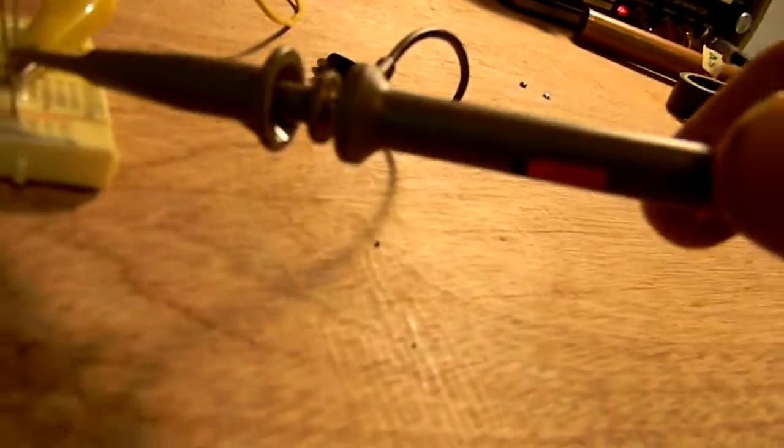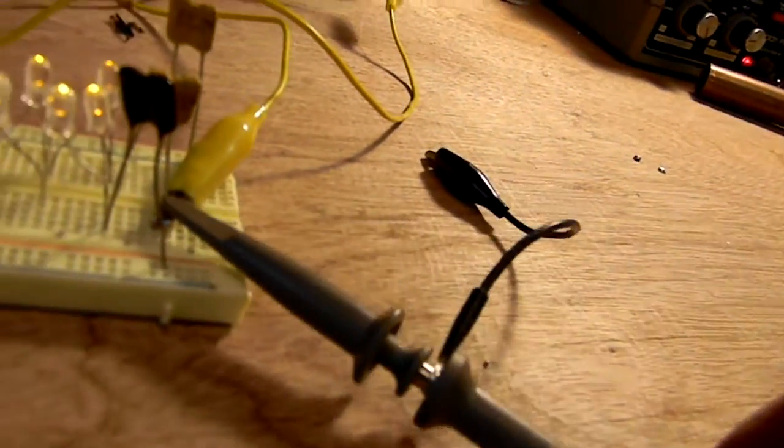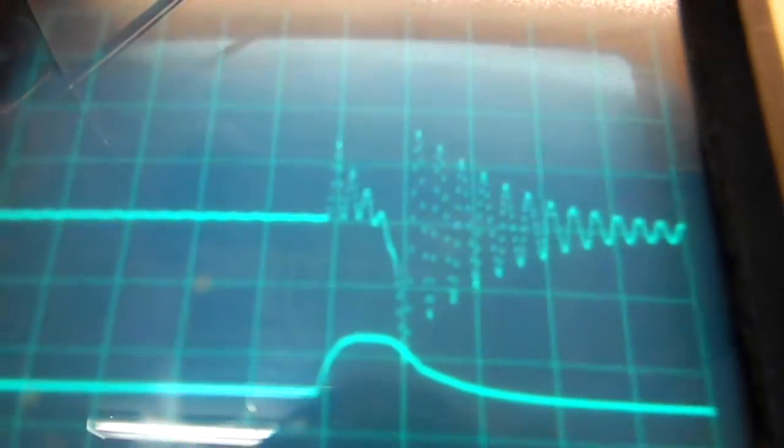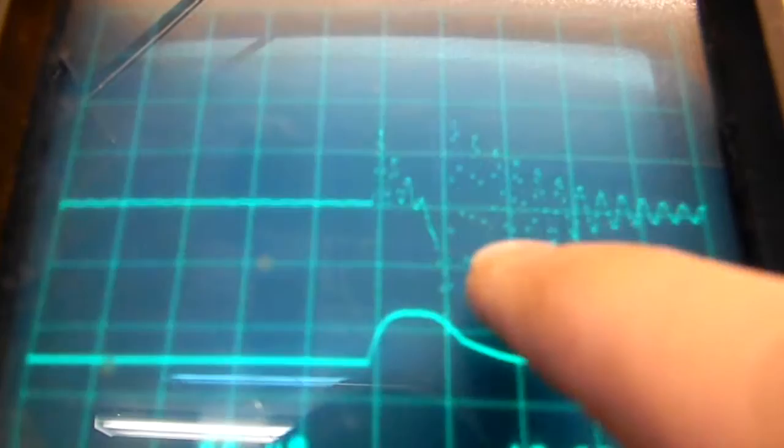And my probe here is set to 100x. So basically on here for this signal, it's 100 volts per division. Right? So if we freeze that, we're getting about one, two, three, a little over 300 volts. Right? And that's just damped oscillation.